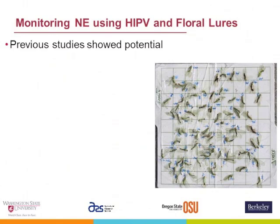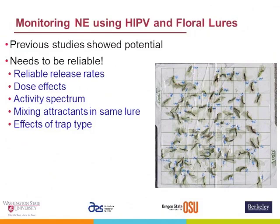Most of the time, people realize biocontrol isn't working only when there's a disaster happening. There's been a lot of work with herbivore-induced plant volatiles — chemicals released by plants when an insect feeds on them that attract natural enemies. Floral lures do the same thing. That trap there, despite its very ugly appearance, shows a large number of lacewings caught. Previous studies had shown the potential, but we knew these things needed to be reliable for use in commercial agriculture.